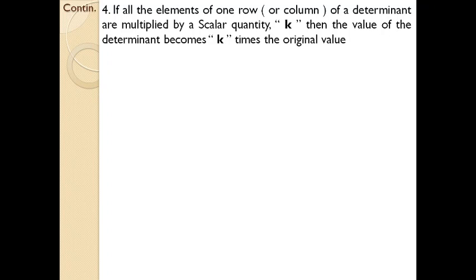We discussed a part of this property in the previous session, where a scalar or common number can be used to multiply a particular row or column. Scalar quantity means it will be a single number used to multiply all the elements of a particular row or column. Then the value of the determinant becomes k times the original value, since you are multiplying an entire row with a common number. That is quite natural.